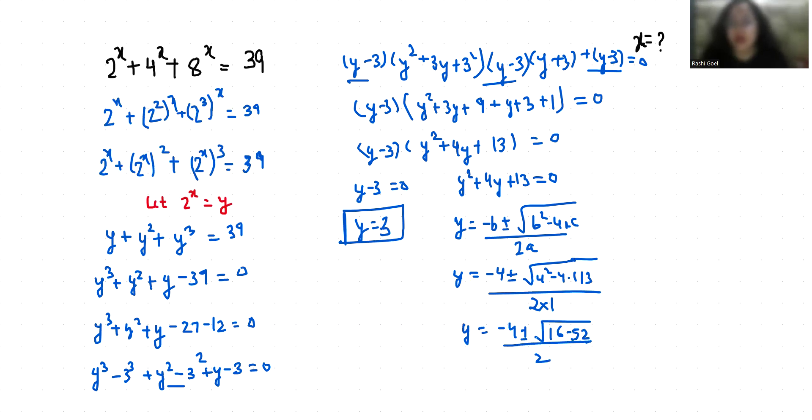-36) / 2. So y = (-4 ± 6i) / 2. Taking 2 common, we can cancel it out, so y = -2 ± 3i.